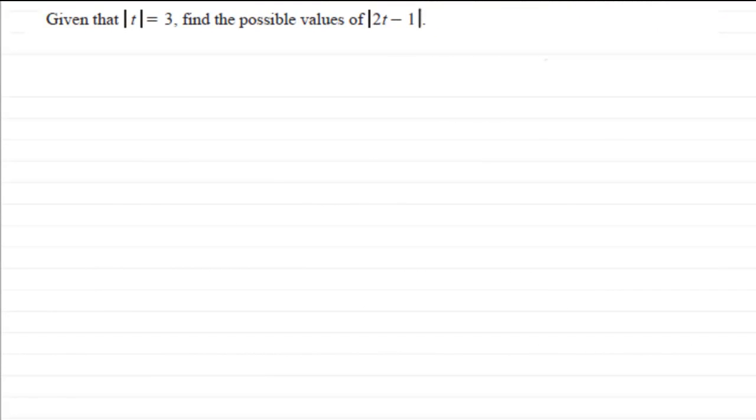Hi, now here we've got a good question that's on modulus of functions. We're given that the mod of t equals 3, and we've got to find the possible values of the mod of 2t minus 1. So if you'd like to give this a go, give you a few moments just to pause the video. Do come back when ready and you can check your solution with mine.